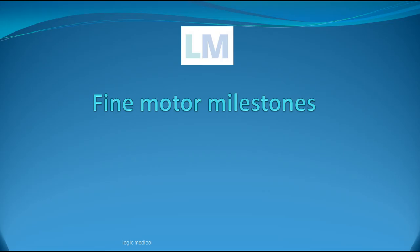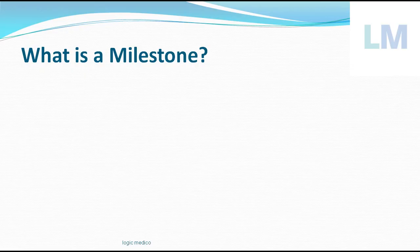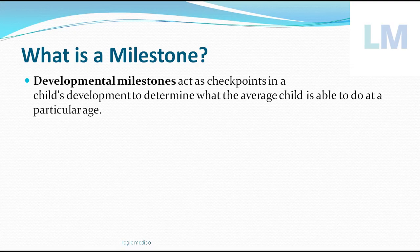So what are fine motor milestones? A milestone is a stone placed by the side of a road or railway which signifies the distance between two cities — that is the literal meaning. In the medical field, it acts as a checkpoint in the child's development to determine what the average child is able to do at a particular age, from birth to 5 years old. This is called a developmental milestone.